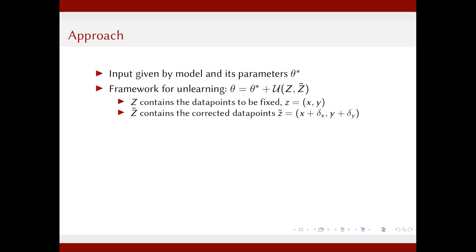Our strategy takes as input a learning model and its optimal set of parameters theta-star after training. We add the output of an unlearning algorithm U to the optimal parameters to perform unlearning. This algorithm takes two input sets, Z and Z-tilde. Z contains the data points to be changed — composed of features X and labels Y — and Z-tilde contains the corrected data points, where we add a small delta to make the desired changes.